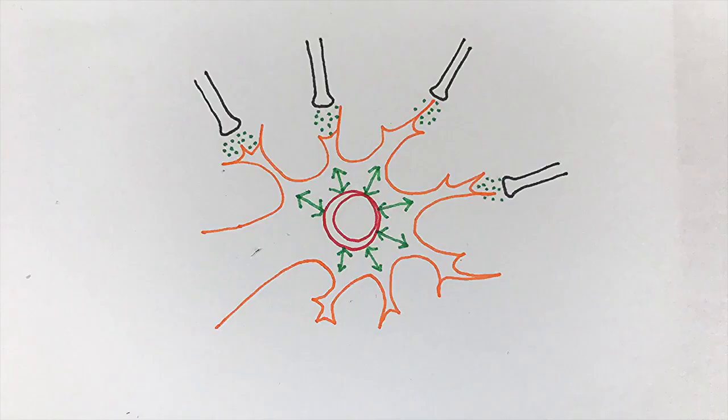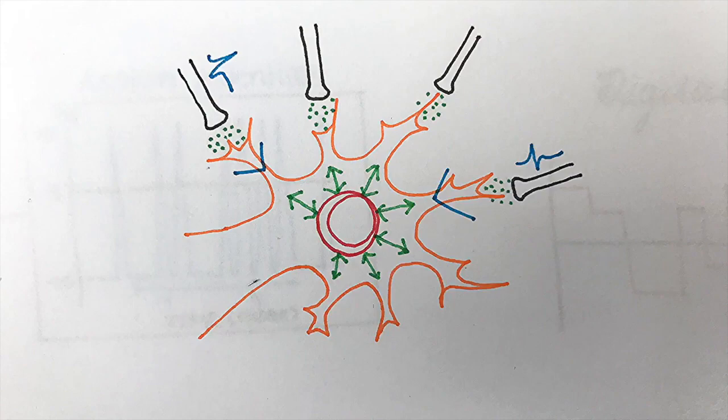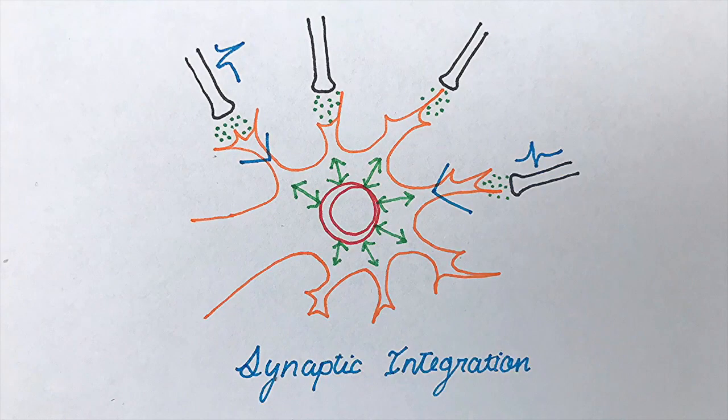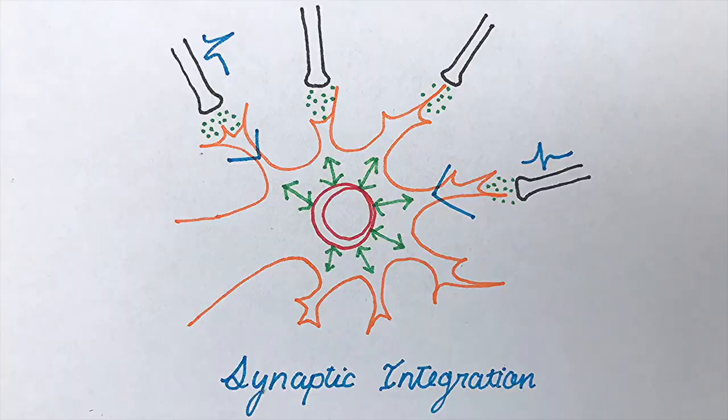Neuron cell bodies are constantly adding up the excitatory and inhibitory synaptic input both in time, called temporal summation, and over the area of their dendrites, called spatial summation.